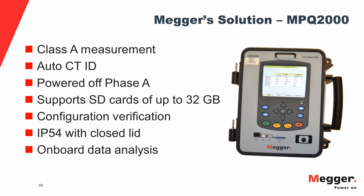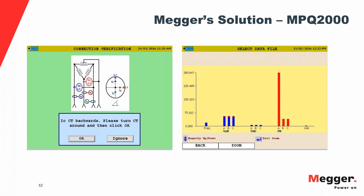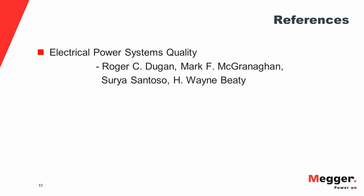You can create your own templates or follow templates provided on the recorder as per EN 50160. These are some screenshots of what the screen looks like: on the left, the unbalance screen showing vector relationships between the three phases; on the right, the recording screen showing voltage, current, and configuration verification messages. There's also the onboard data analysis screen. Thank you for listening in.